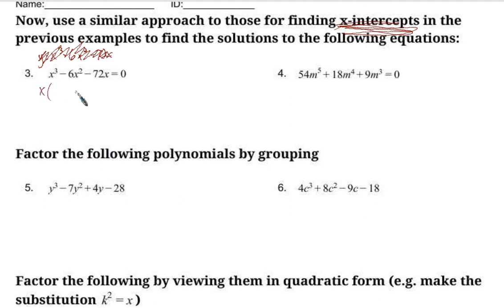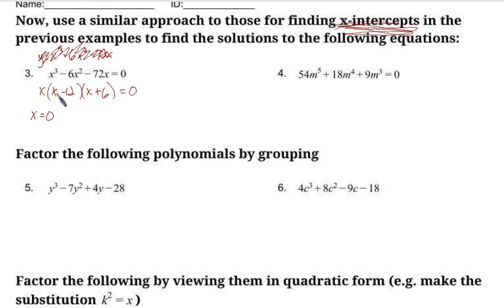We factor out an x, giving x(x² − 6x − 72) = 0. We find two numbers that multiply to −72 and add to −6: negative 12 and positive 6. So solutions are x = 0, x = 12 (since 12 − 12 = 0), and x = −6. We set up x = 0, x − 12 = 0, and x + 6 = 0, and solve each for x.